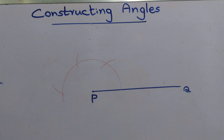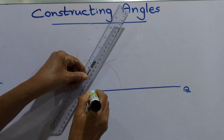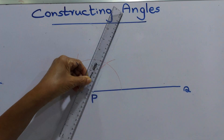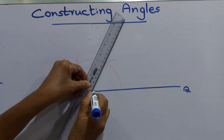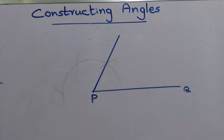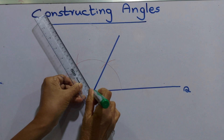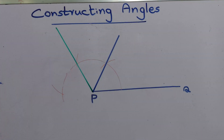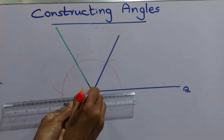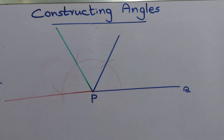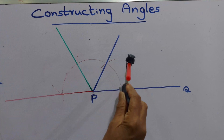Now we can join these points. From point P to here, to this point. From point P to this point. From point P to this point. From point P to this point. Then we can draw another arc.